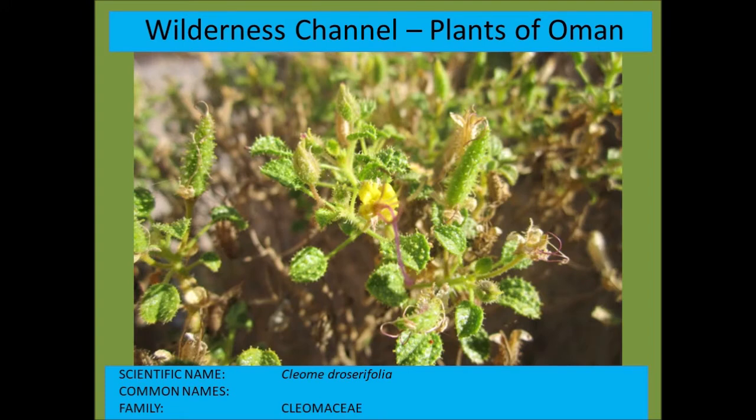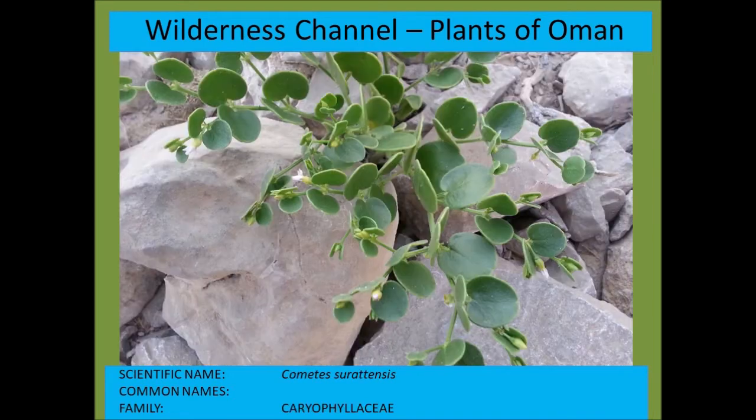Cleome drosserifolia has these gland-like structures on the leaves. Going back to that — from the Caryophyllaceae or pink family, this is Cometes serotinensis.